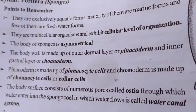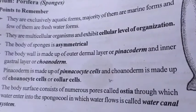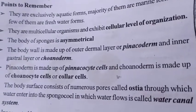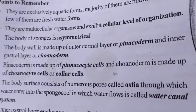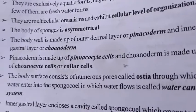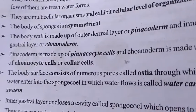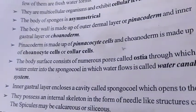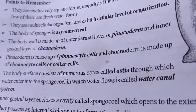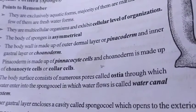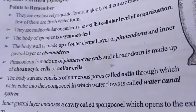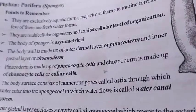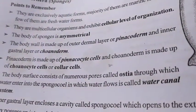Starting with Phylum Porifera general characteristics — you need to concentrate and study at least five to six characteristics. They are exclusively aquatic forms, which means they live in water; they are marine forms and few of them are freshwater forms. They are multicellular organisms and exhibit cellular level of organization. The body of sponges is asymmetrical, meaning the body is not divided equally. The body wall is made up of an outer dermal or pinacoderm layer and an inner gastral layer or choanoderm.